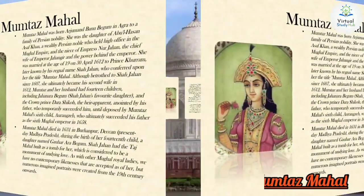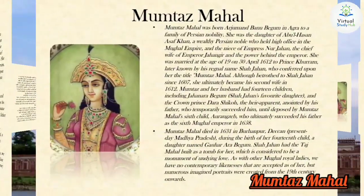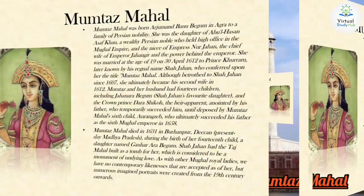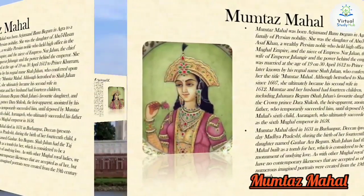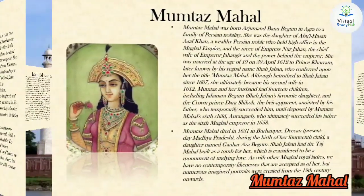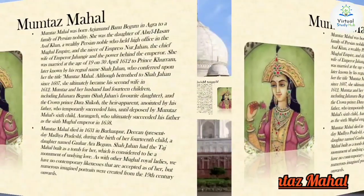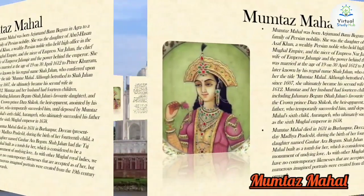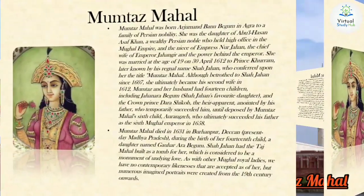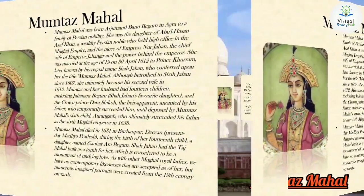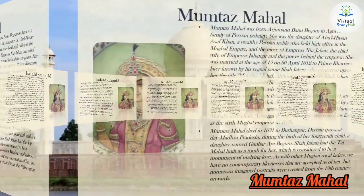Mumtaz Mahal and her husband had 14 children. Their daughter Jahanara became Shah Jahan's favorite daughter, while their son Dara Shikoh was named heir apparent. However, it was Mumtaz Mahal's sixth child Aurangzeb who ultimately succeeded his father as the sixth Mughal Emperor in 1658. Mumtaz Mahal died in 1631 in Burhanpur in Deccan, present-day Madhya Pradesh, during the birth of their daughter Gauhar Ara Begum. Shah Jahan had the Taj Mahal built as a tomb for her, considered to be a monument of undying love. As with other Mughal royal ladies, no contemporary likenesses are accepted as authentic, but numerous imagined portraits were created from the 19th century onwards.